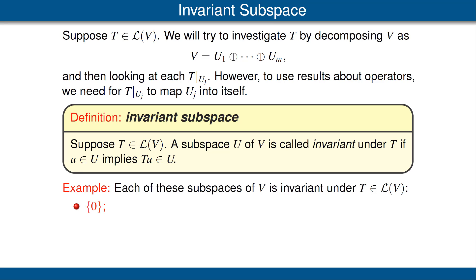Suppose T is a linear map from V to V. First, the subspace consisting of just 0 is invariant under T, because T of 0 equals 0. Second, the whole vector space V is invariant under T, because if we take a vector in V, then T of that vector is also in V by definition. Third, the null space of T is invariant: if we take any vector in the null space of T, then T of that vector is 0, which is in the null space. Thus T maps the null space into itself. Fourth, the range of T is invariant: if we take any vector in the range of T, then T of that is also in the range of T.